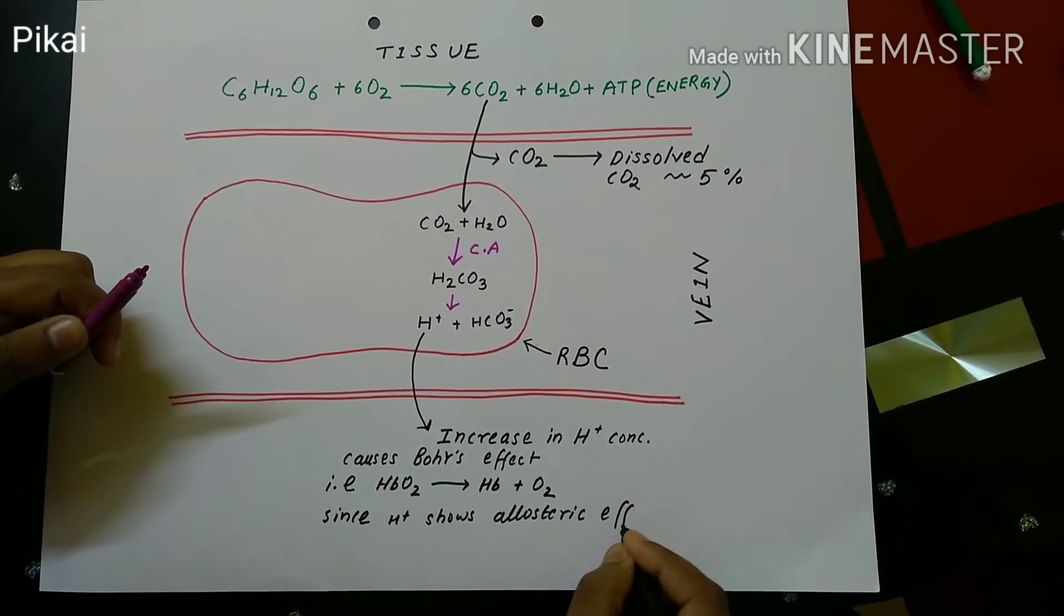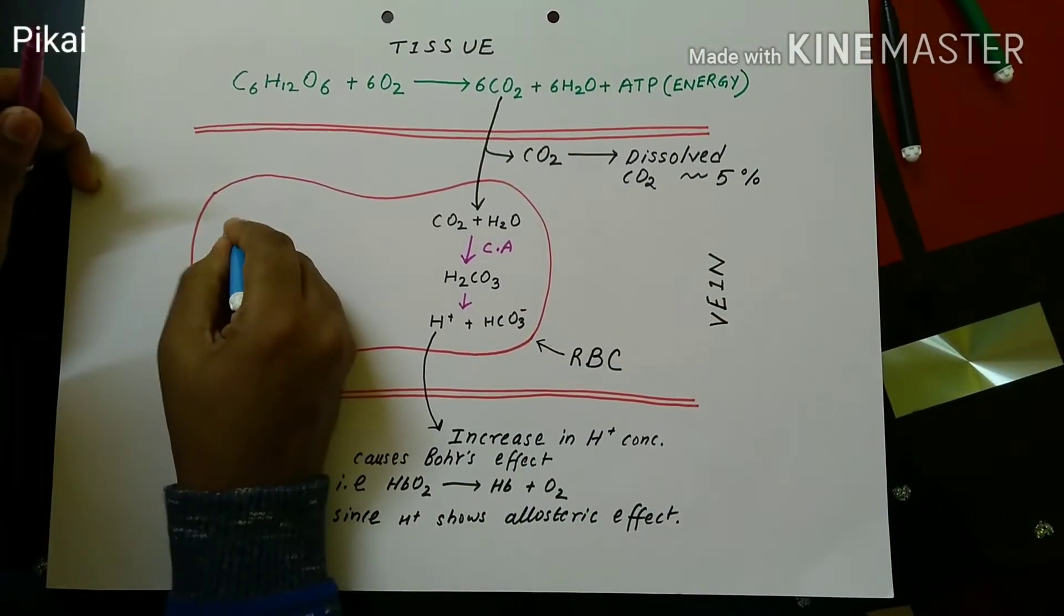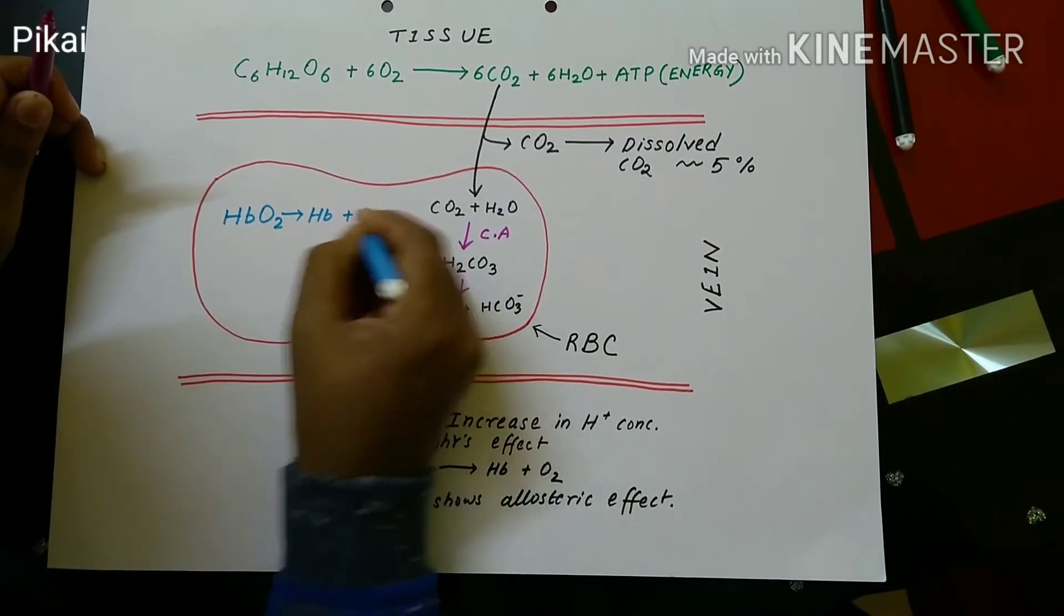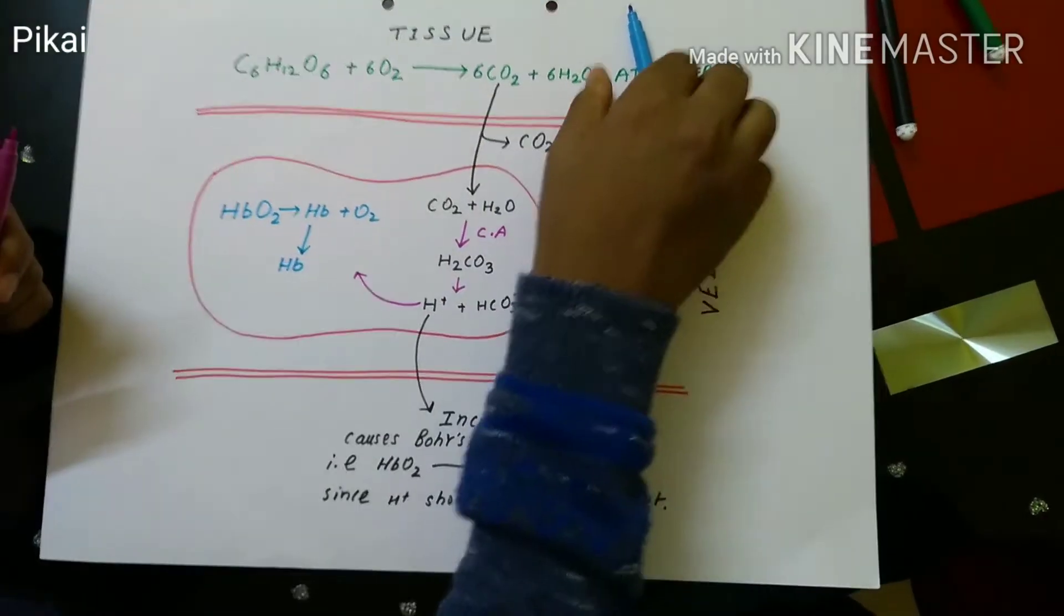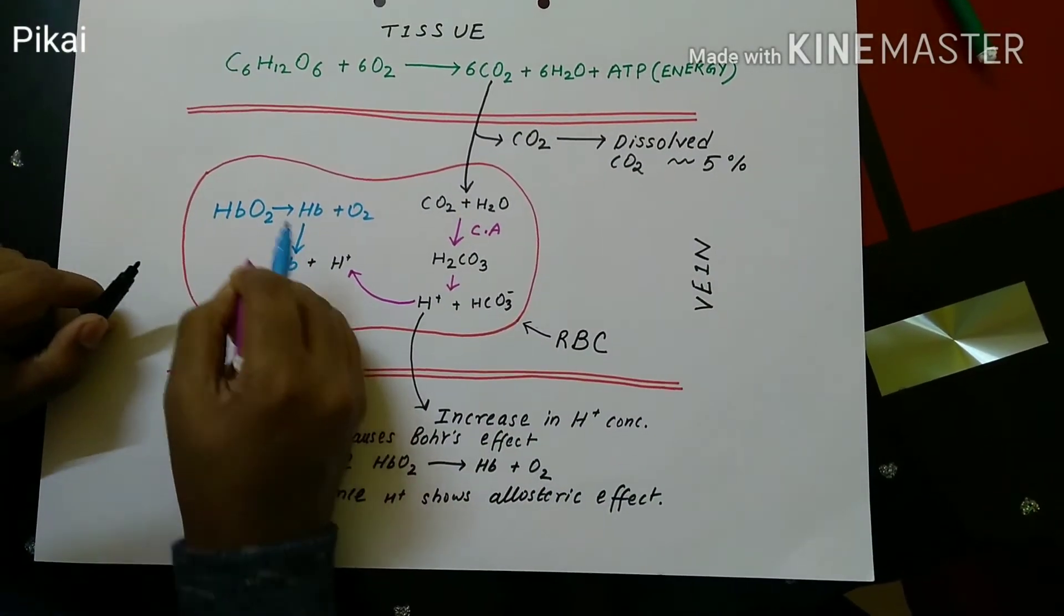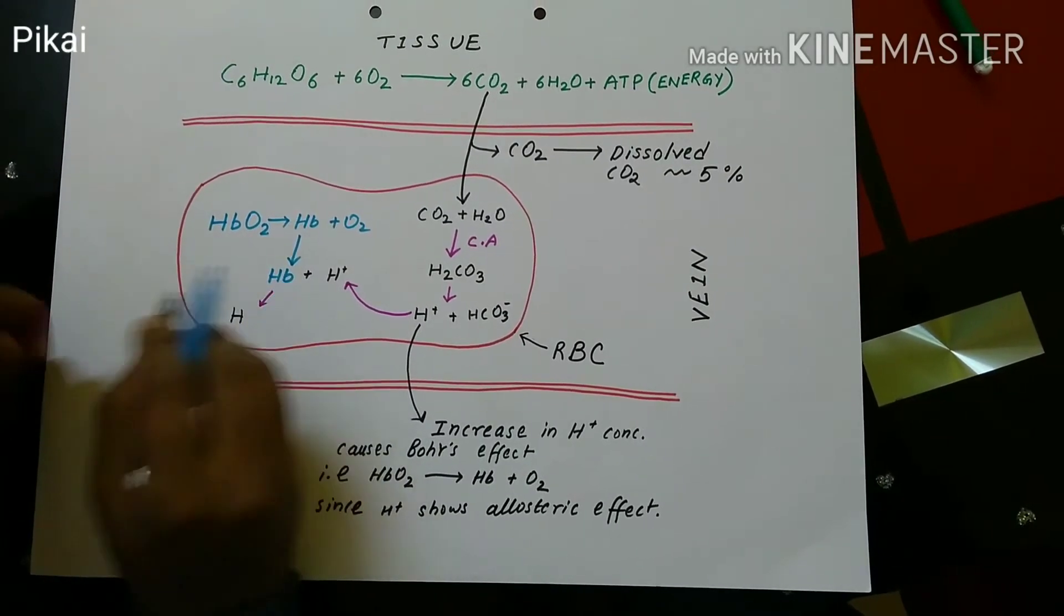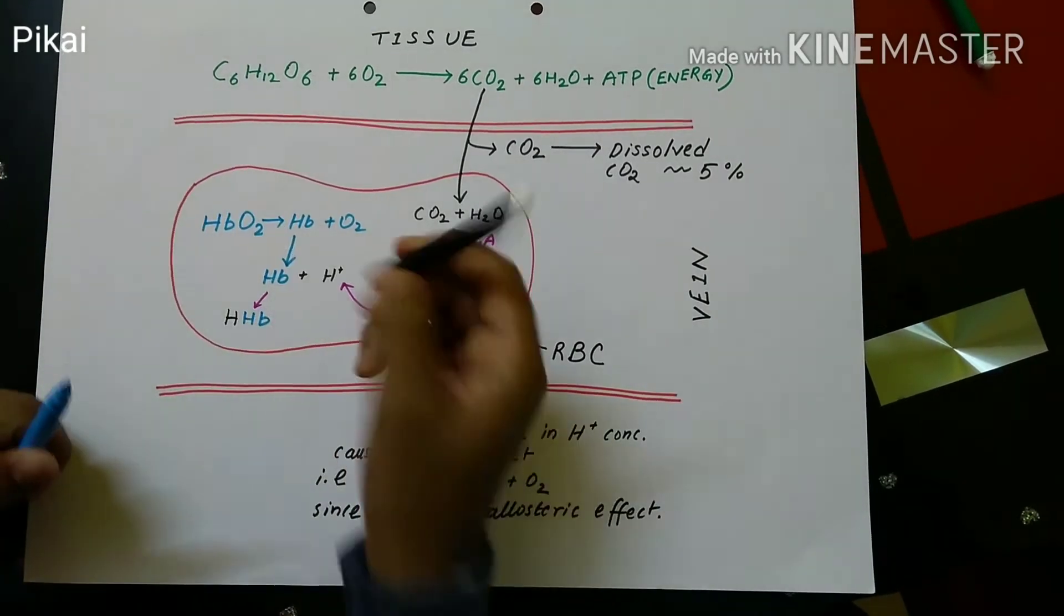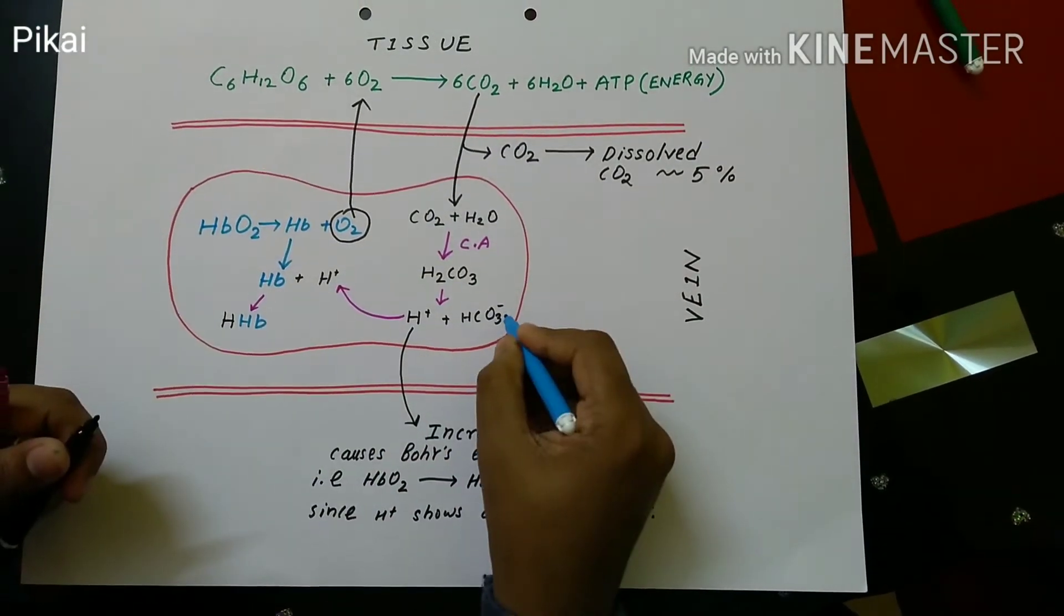increase in HCO3- ion causes another reaction. So the HbO2 dissociates into Hb and O2 as I have told, due to the increasing amount of H+ which leads to a Bohr effect. This H+ then combines with hemoglobin to form HHb. But the oxygen which was released due to the breakdown of HbO2 is now separate. So this oxygen goes to the tissue and fulfills the demand of O2 for the breakdown of glucose, that is the cellular respiration.